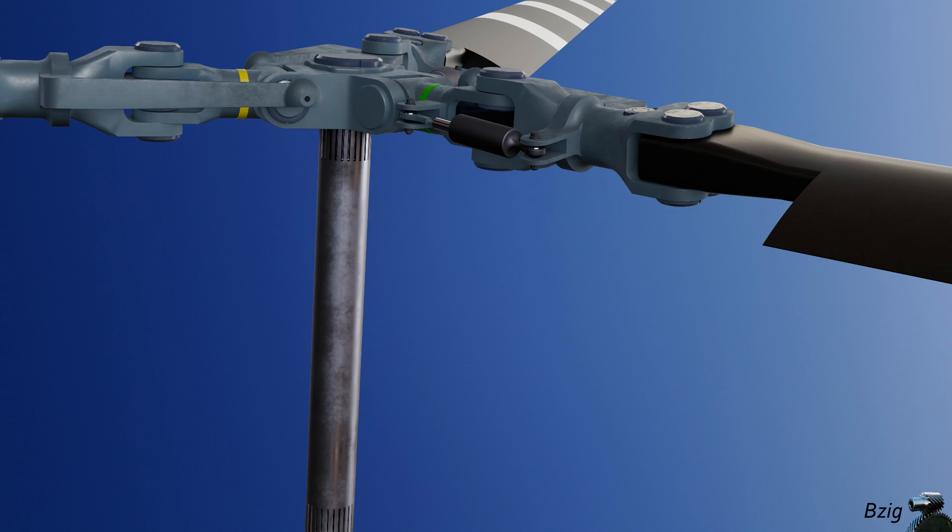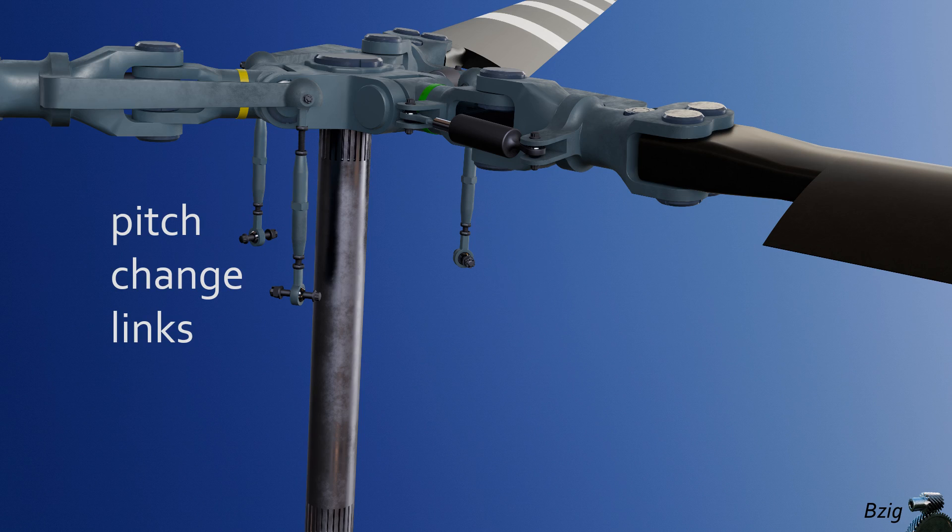As we've already mentioned, blade feathering is controlled by the pitch change arms, and connected to these pitch change arms are these devices called pitch change links. These links are also adjustable, and mechanics use this adjustment to make sure that all of the blades fly in the same track. Tracked blades reduce vibration and improve the ride quality of the helicopter.